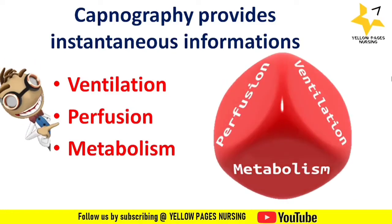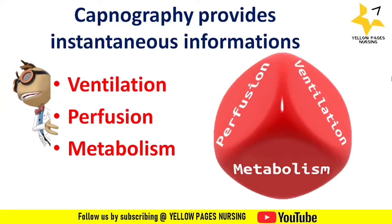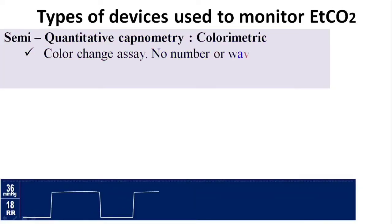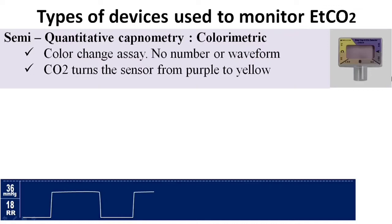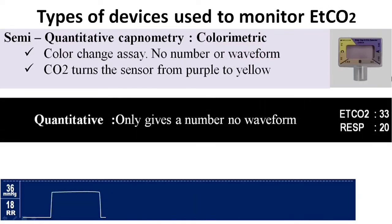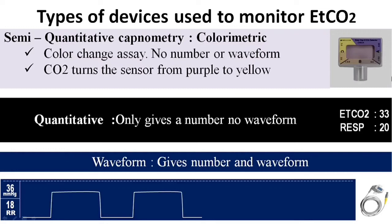Now let's discuss the types of devices used to monitor EtCO2. Semi-quantitative capnometry includes the colorimetric EtCO2 detector, which uses a color change assay — purple, tan, and yellow — with no number or waveform, only indicating whether EtCO2 is present or not. Quantitative capnometry gives only a number with no waveform, while the other type gives both a waveform and a number, as shown in this picture.